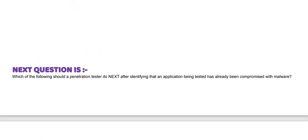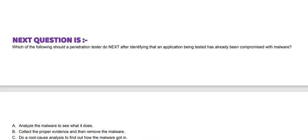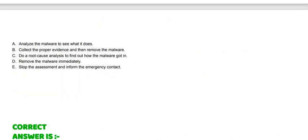Next question is: Which of the following should a penetration tester do next after identifying that an application being tested has already been compromised with malware? Option A: Analyze the malware to see what it does. Option B: Collect the proper evidence and then remove the malware. Option C: Do a root cause analysis to find out how the malware got in. Option D: Remove the malware immediately. Option E: Stop the assessment and inform the emergency contact.